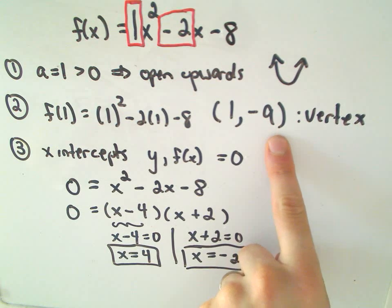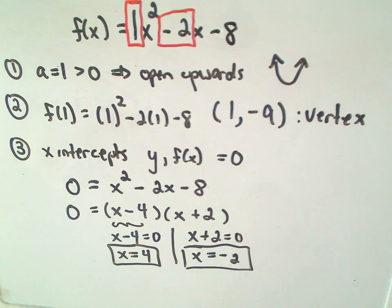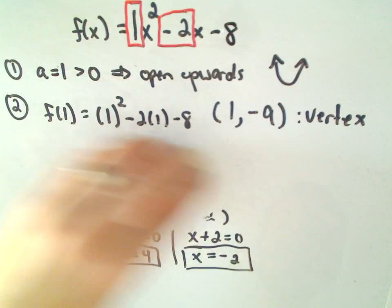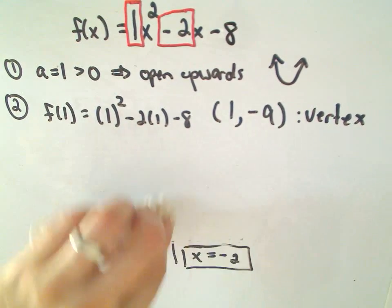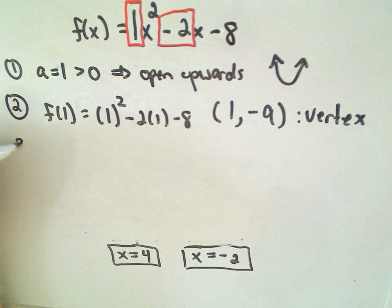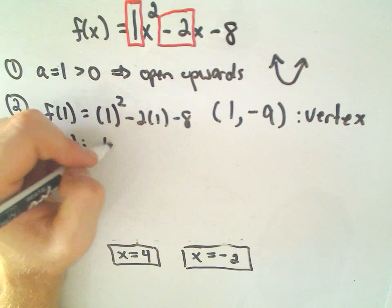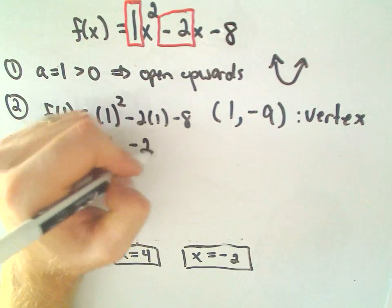And if you think about the vertex, and the fact that it's opening upwards, intuitively, I think it should have two x-intercepts, if you just think about the geometry. So I know my x-intercepts are going to be at 4 and negative 2.